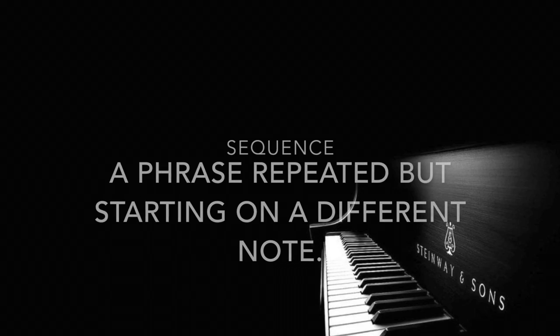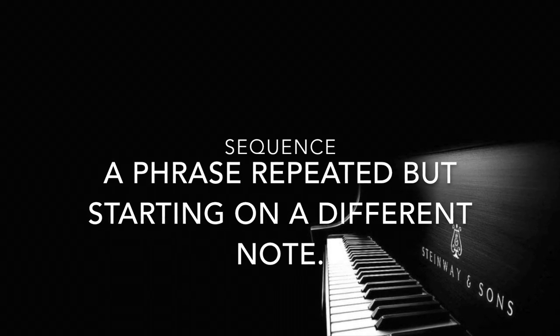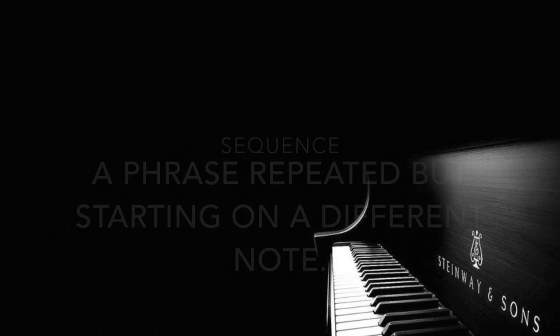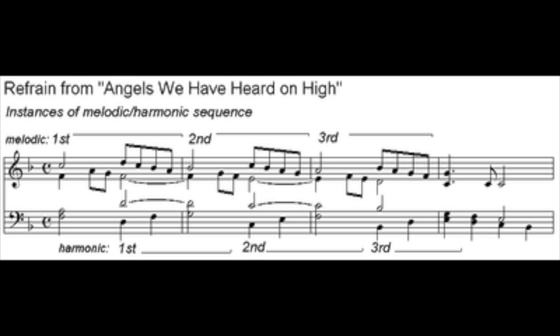You might also encounter a sequence when you are describing your melody — a sequence where we have a short phrase that is repeated, maybe one or two notes above or below, like in this example. There you have the same melodic shape but starting on a note one note lower each time. Here's another example where the phrase starts on a note above each time.